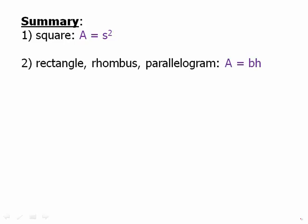In summary, a square has an area of s squared. The rectangle, rhombus, and parallelogram have an area of base times height. We have to be careful. In a rhombus or a parallelogram, any side can be the base, but the other side is not going to be the height. The height has to be perpendicular to the base. We need to find the altitude.